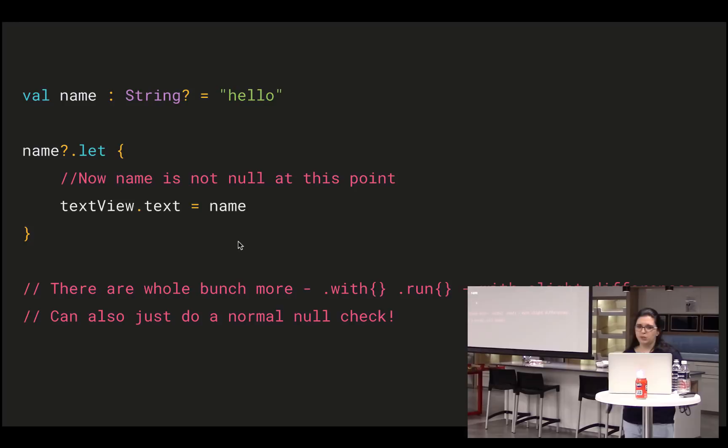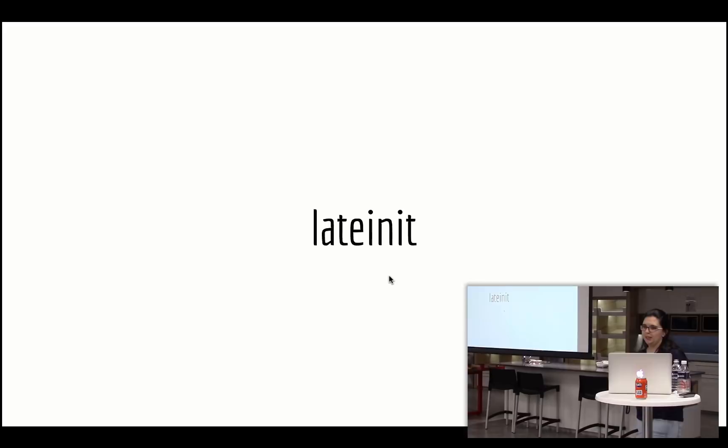There's a common pattern using the let function — name?.let { } — which says within this block the value will not be null. It's basically a null check block. The problem is you don't get an else case with let, but you can still use a regular if/else for that. There are also other operators like run, apply, and more — there's a really good talk online about the differences between with, run, let, and similar functions.